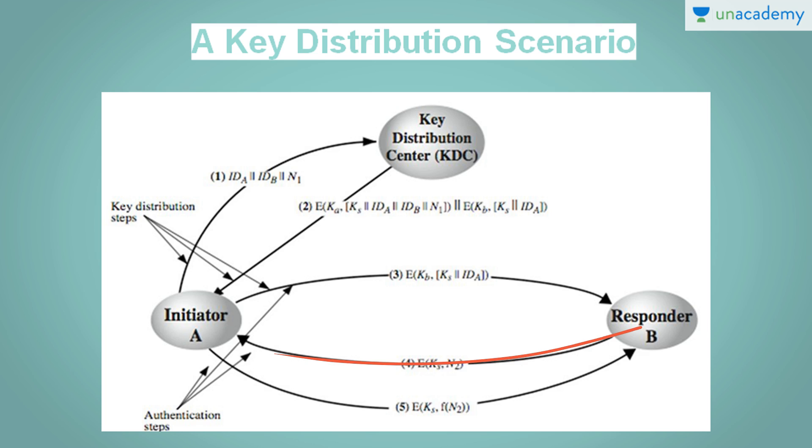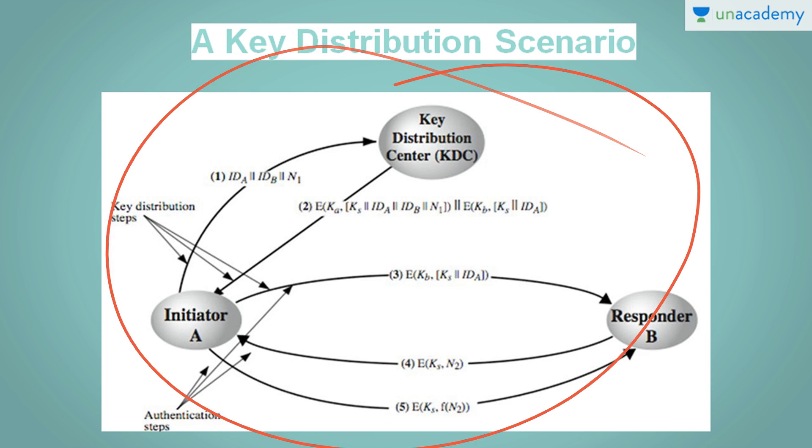However, there are two additional steps that are desirable. First, using the newly minted session key for encryption, B sends an identifier to A. Let's say this identifier is N. Also, using A's session key, A responds with F of N. Now, what is this F of N? F is a function that performs some transformation on the identifier N. This transformation can be a multiplication of a number, addition of a number, or increase of the counter. So, these steps assure B that the original message that it received was not a replay. So, this is how your entire key distribution process works. It might look a little complex but it ensures complete safety of your message.